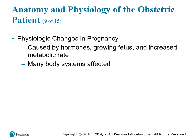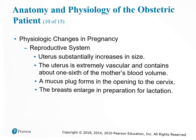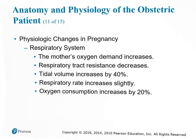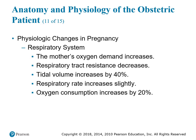Physiologic changes in pregnancy are caused by hormones, the growing fetus, and increased metabolic rate, affecting many body systems. In the reproductive system, the uterus substantially increases in size, is extremely vascular, and contains about one-sixth of the mother's blood volume. The mucus plug forms in the opening of the cervix and the breasts enlarge in preparation for lactation. In the respiratory system, the mother's oxygen demand increases, respiratory tract resistance decreases.